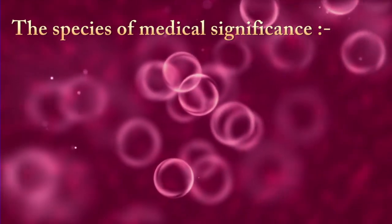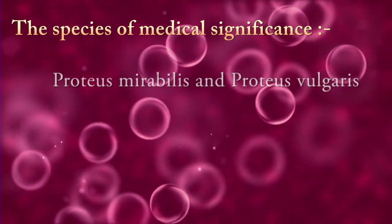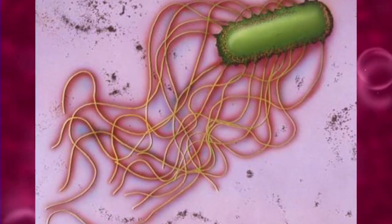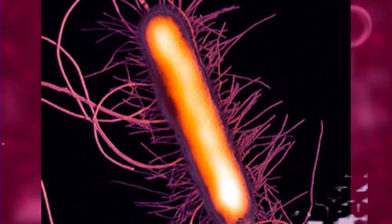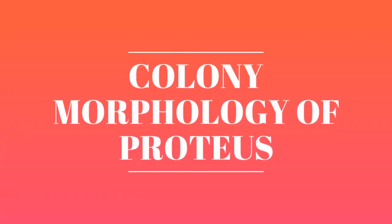The species of medical significance are Proteus mirabilis and Proteus vulgaris. Proteus mirabilis causes 90% of all Proteus infections in humans. So in this video we are going to study colony morphologies of Proteus species.